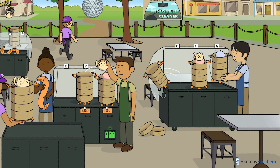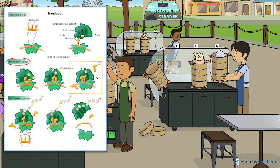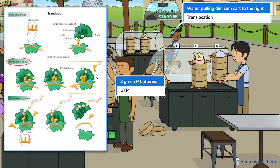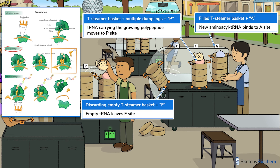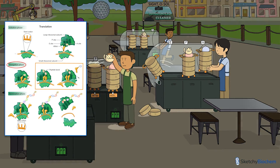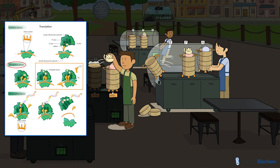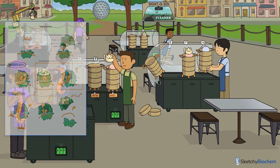The next step is translocation, where the ribosome moves three bases in the 3' direction so there's a fresh new codon available in the A-site. This step requires GTP. Now that the ribosome has moved over, the empty tRNA can leave from the E-site and the tRNA carrying the polypeptide moves from A to P. This frees up the A-site to accept another charged tRNA, and all of these steps will repeat — elongating the polypeptide until we reach the final stage of translation, termination.